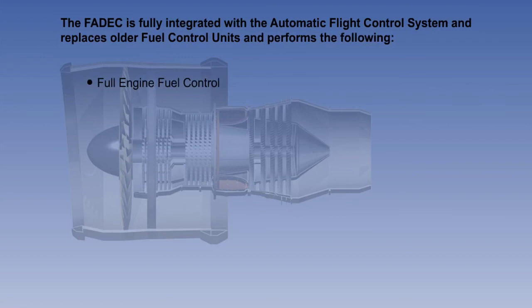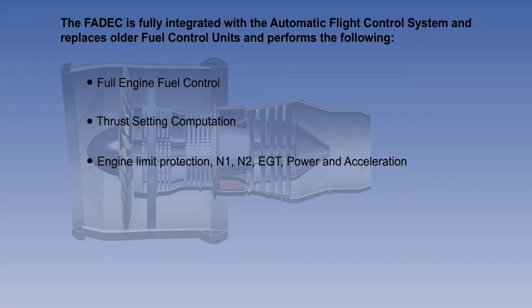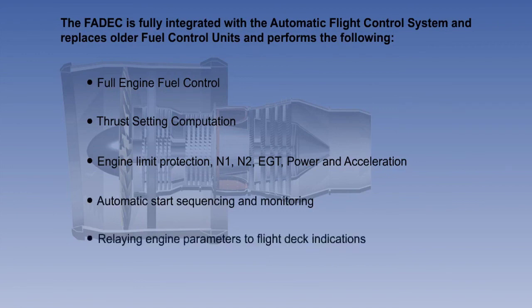FADEC performs the following functions: full engine fuel control; thrust setting computation; engine limit protection, including N1, N2, exhaust gas temperature, power and acceleration; automatic start sequencing and monitoring; relaying engine parameters to flight deck indications; and thrust reverser activation.